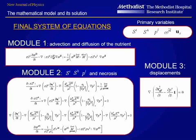The primary variables are the degrees of saturation of the tumor and host cells, the pressure of the interstitial fluid, the mass fraction of the nutrient, and the solid displacement.